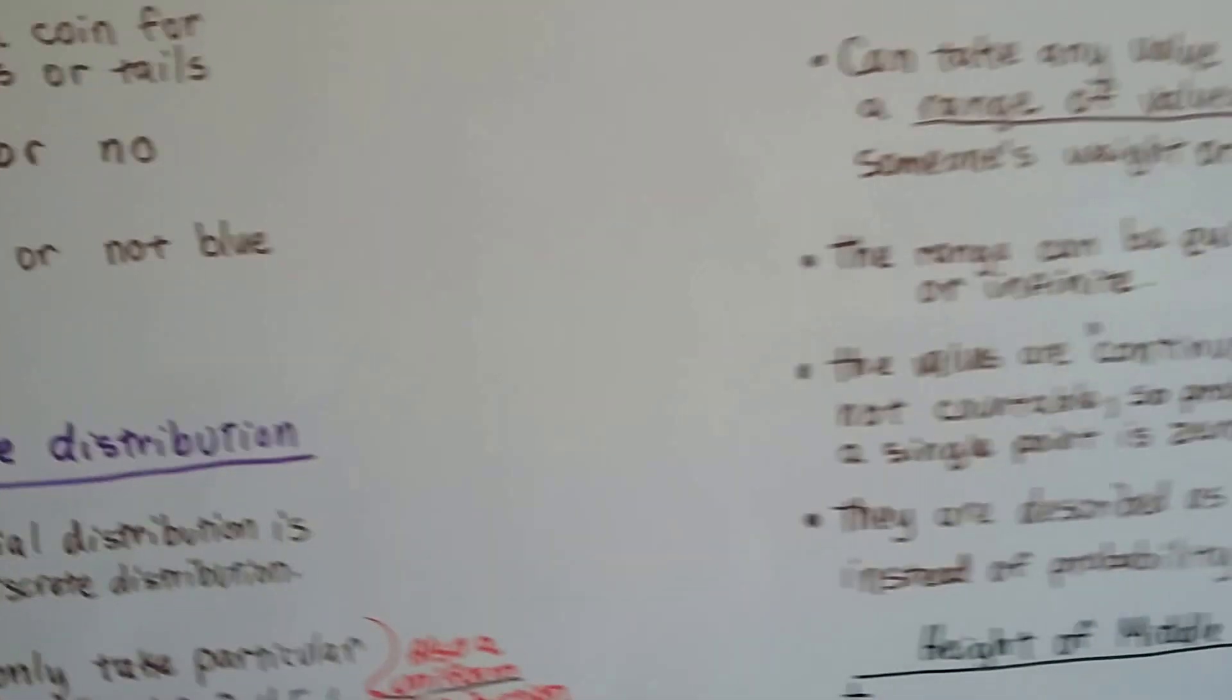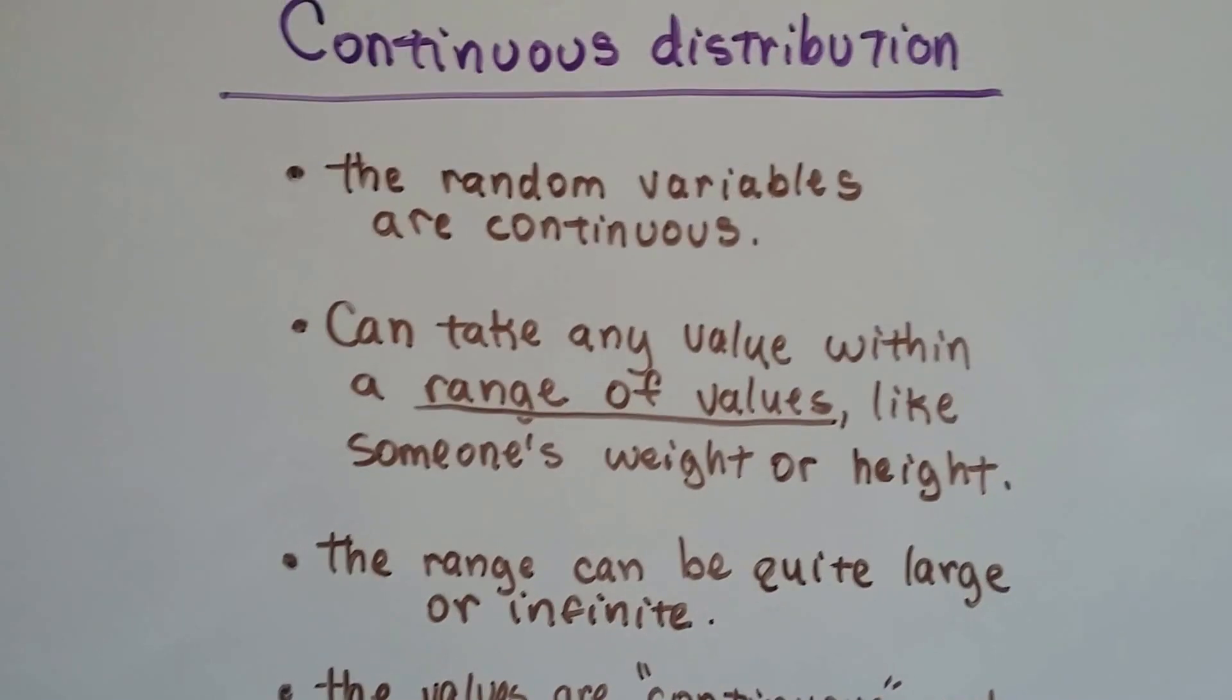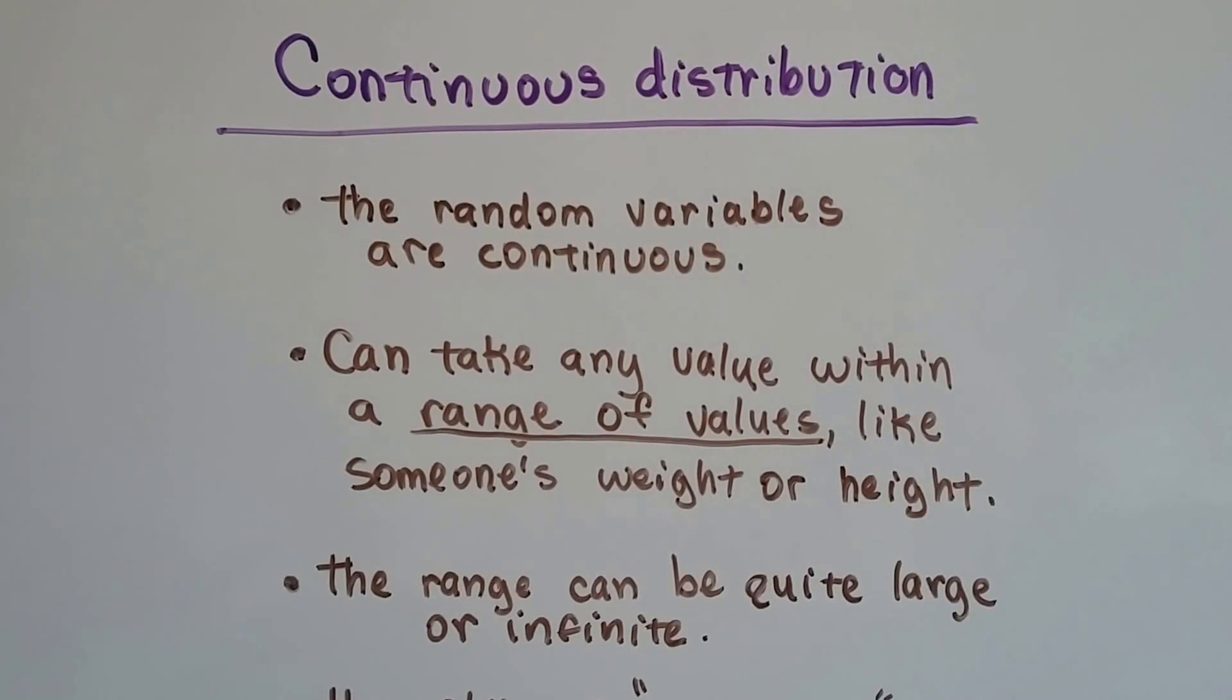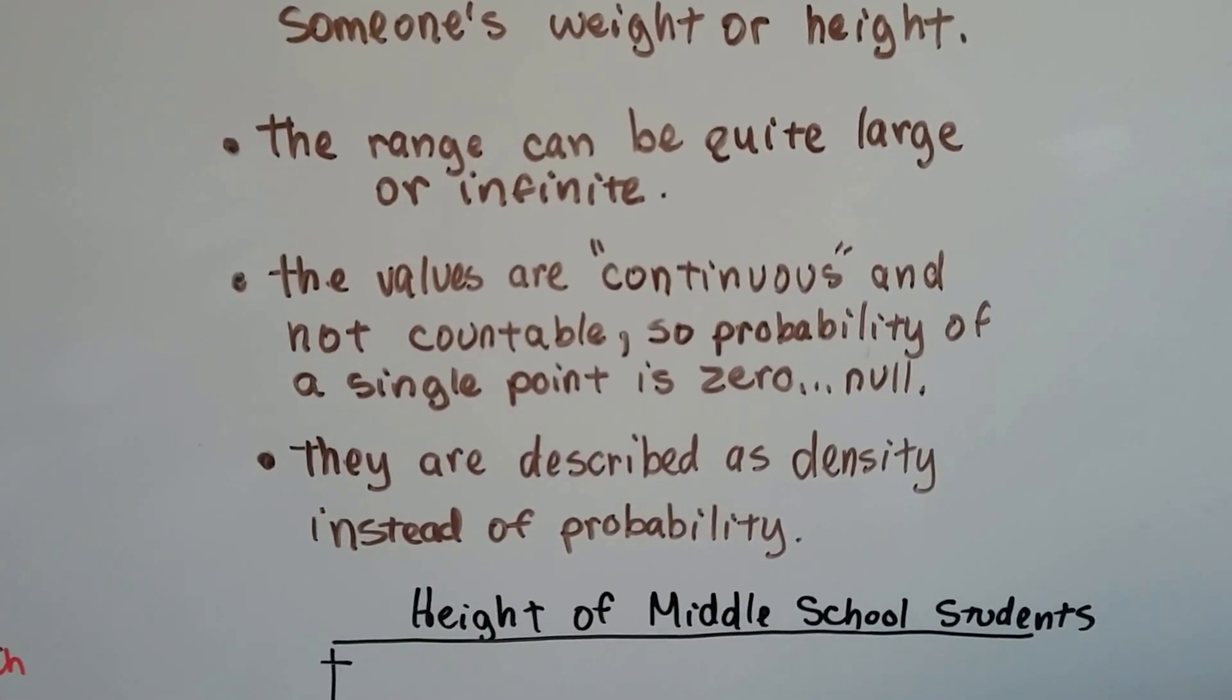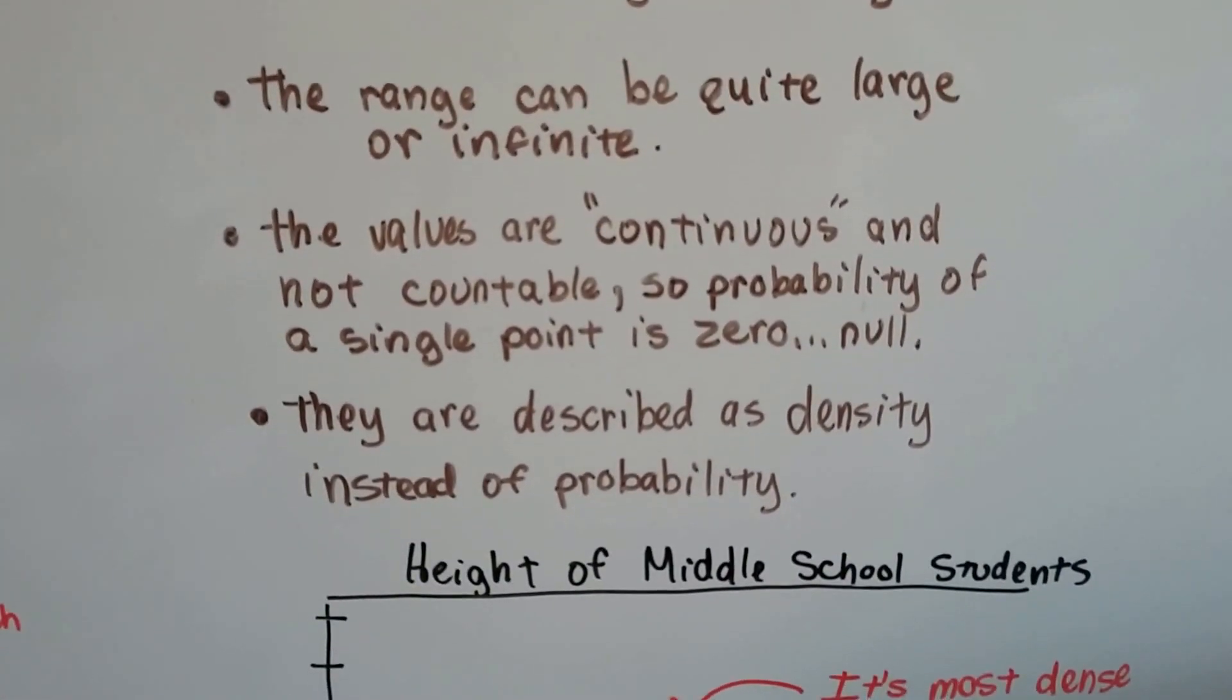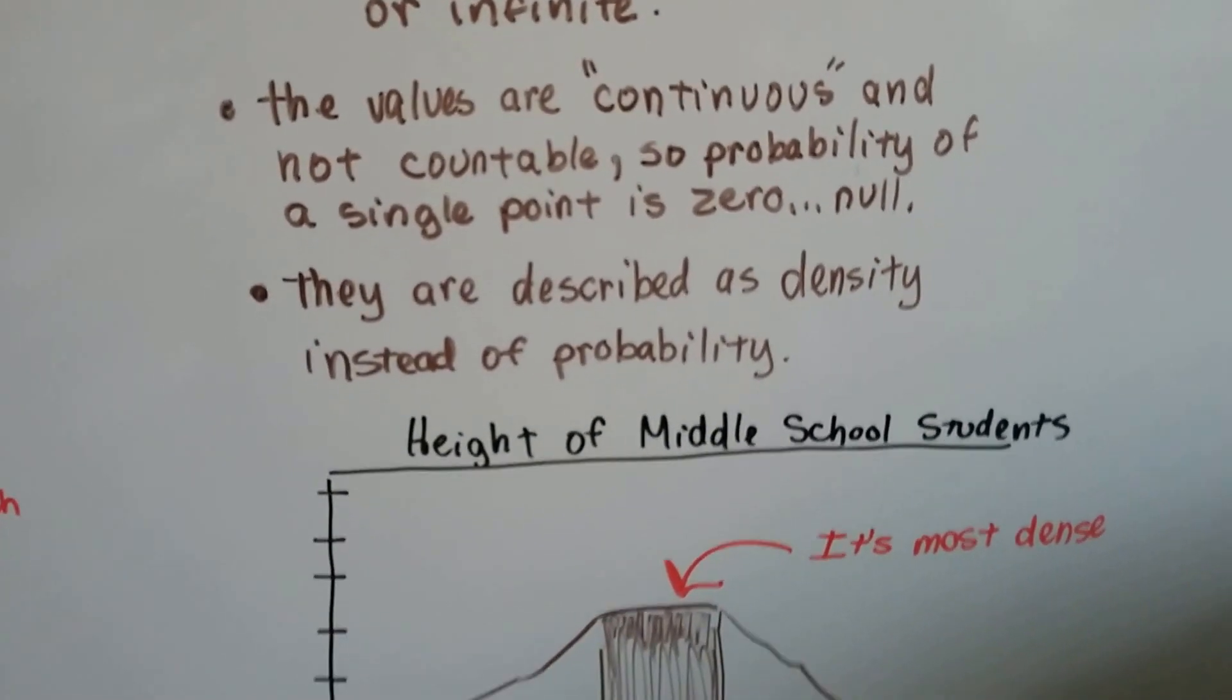Then there's continuous distribution. The random variables are continuous and they take any value within a range of values, like someone's weight or height, like a group of people's weight or height. The range can be quite large or infinite, and the values are continuous and not countable. So probability of a single point is zero—it's null. They're described as density instead of probability.